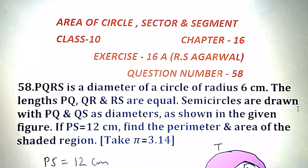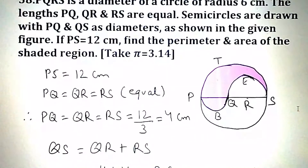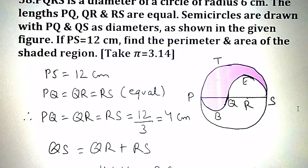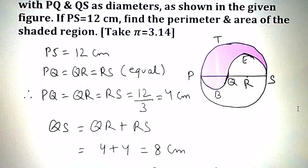Since it is given that PS equals 12 centimeters, and also it is given that PQ equals QR equals RS, therefore the value of PQ, QR and RS will each be 4 centimeters. The value of QS is equal to QR plus RS, that is 4 plus 4, which is equal to 8 centimeters.